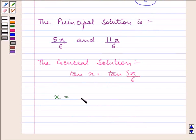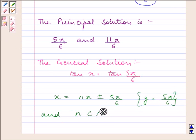The general solution gives x as n pi plus 5 pi by 6, where n belongs to the set of integers.